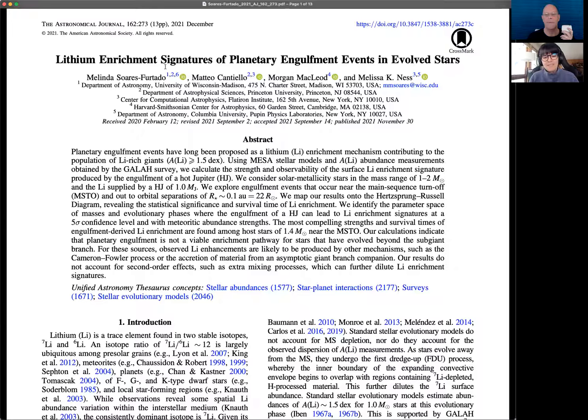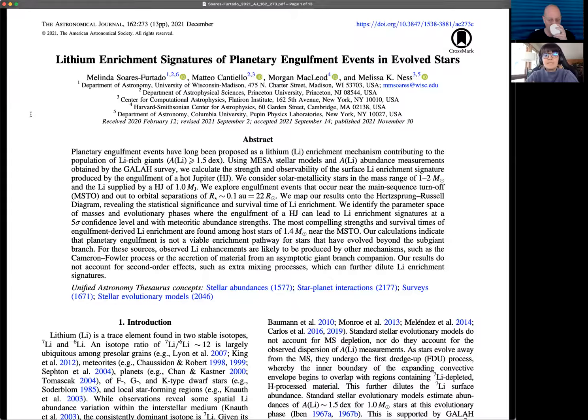This will lead us to this very lovely AJ article. Lithium enrichment signatures of planetary engulfment events in evolved stars. Take us away. First off, I want to say a thank you to the coauthors that helped make this work possible. This was done with Matteo Cantiello, Morgan McLeod, and Melissa Ness. The question really was, if a star was to eat a Jupiter sized planet, what sorts of abundance anomalies might you see?